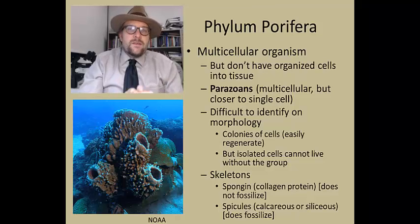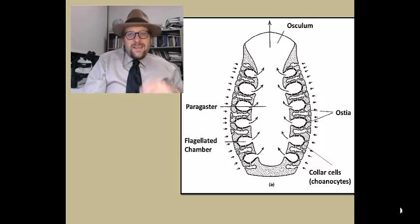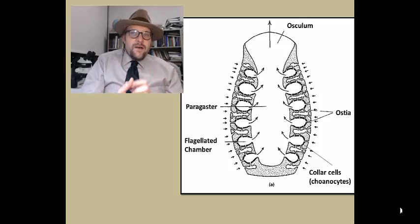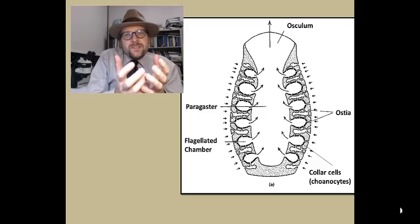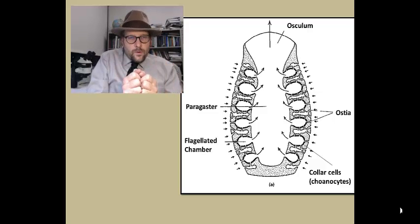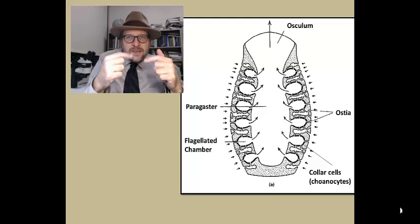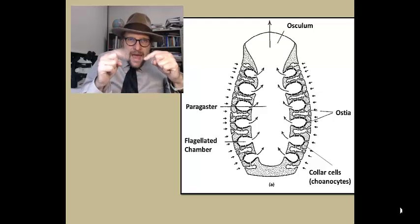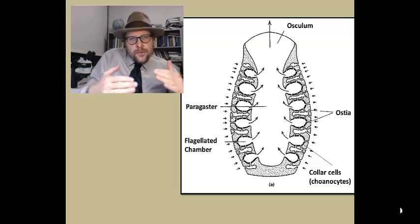A typical sponge is basically a sac with a central cavity called the paragaster, with a wide opening at the top called the osculum. The sponge is perforated by thousands of tiny holes called ostia, which lead into canals and into chambers lined with cells that have flagellated tails that beat back and forth continuously, creating a current of water flow that passes into the ostia and out through the osculum.